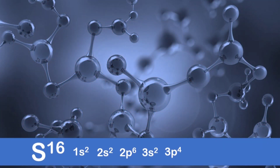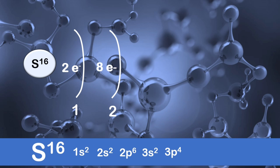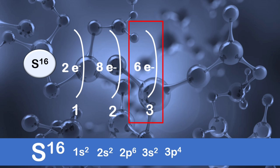Now, let us use the half-shell notation, where the shells represent the main energy level. For the first energy level, or the first shell, we're going to put 2 electrons. For the second shell, we're going to put 8 electrons because 2 plus 6 is 8. For the third shell, we're going to put 6 electrons because 2 plus 4 is 6. As you can see in this half-shell notation, the outermost shell is this one.